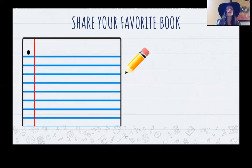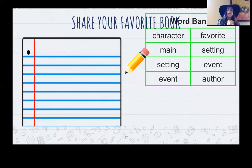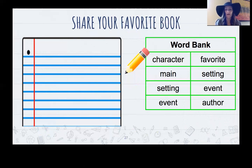Alright. We're going to start with our activity. Today your activity is to share your favorite book. I have a word bank here to help you out. In the word bank, let's read the words together. Point to the first word. The word is character. Main. Setting. Event. Favorite. Setting. Event. Author. You might notice that there are two words in there twice because I really want you to use those words in your writing.